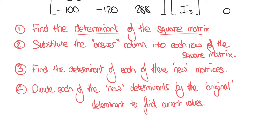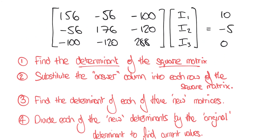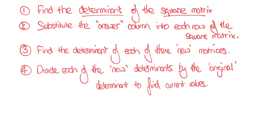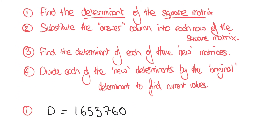For the sake of keeping this video short, we won't cover how to calculate the determinant of a matrix here — we have a separate video for that, linked if you're on YouTube. For this original matrix, we call the determinant D, and D turns out to be 1,653,760. This seems like a large number, but don't worry — this is quite normal, and our later steps will rectify this, giving us reasonable current values.